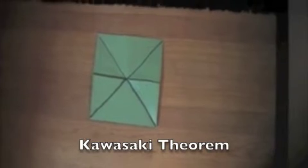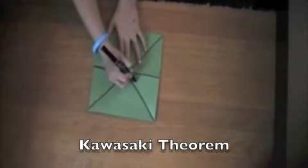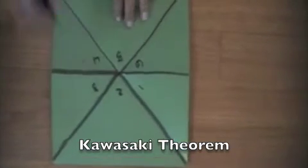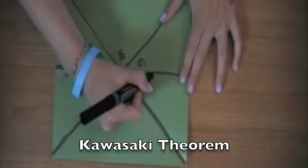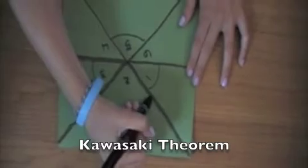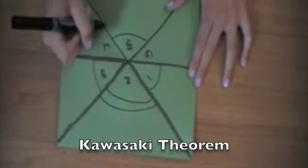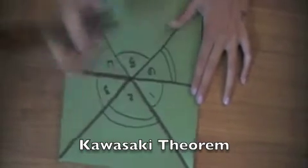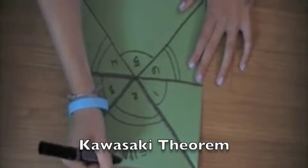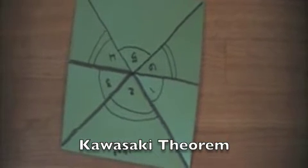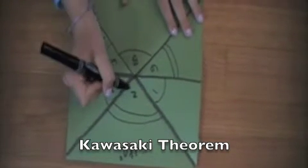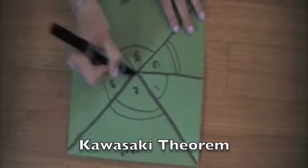An example of the Kawasaki theorem is that if this is angle 1, angle 2, 3, 4, 5, and 6. So if angle 1 plus angle 3 plus angle 5, all of the odd angles and angle 2 plus angle 4 plus angle 6, all of the even angles equals 180 degrees. Therefore then this piece of origami is flat foldable.